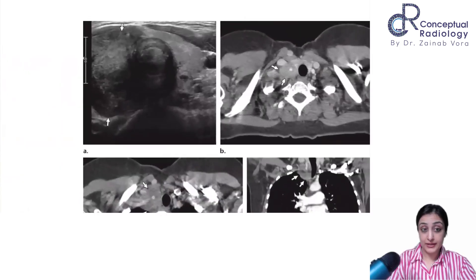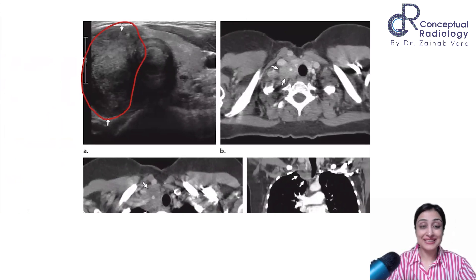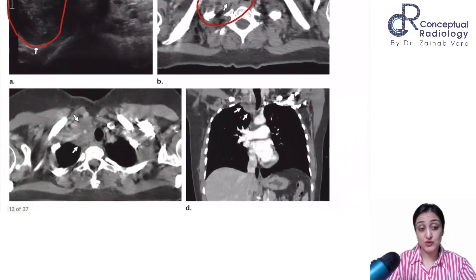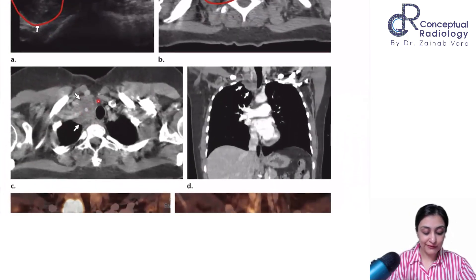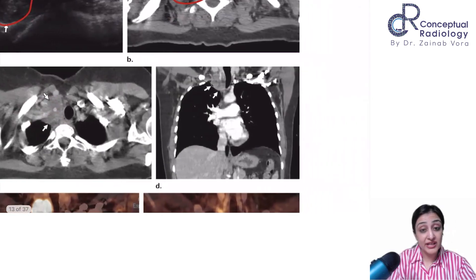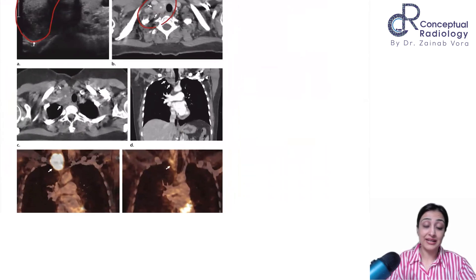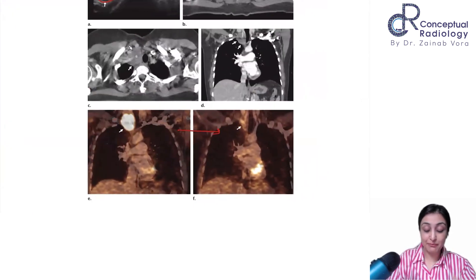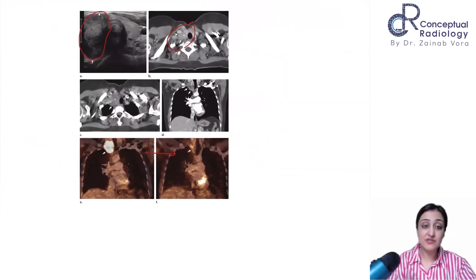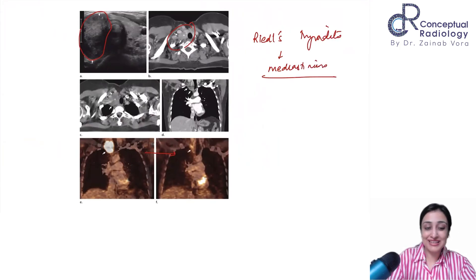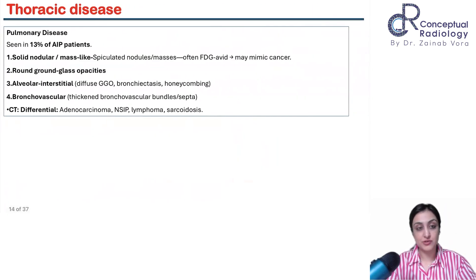Another case: clinically a stony hard swelling. Ultrasound shows infiltrative hypoechoic thickening. CT shows very infiltrative tissue encasing the carotid artery — this is Riedel's thyroiditis encasing the brachiocephalic and common carotid vessels and extending into the mediastinum. PET shows uptake, mimicking cancer. Upon treatment, there is marked reduction in mass size — it just disappears with steroids. That is the hallmark.